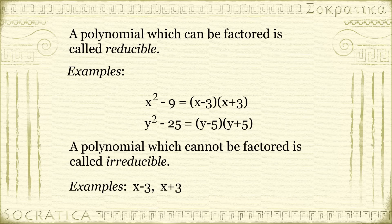They're irreducible. Similarly, we saw that we could factor y² - 25 as (y - 5)(y + 5). Now y - 5 and y + 5 are also irreducible. You cannot factor them into smaller polynomials.